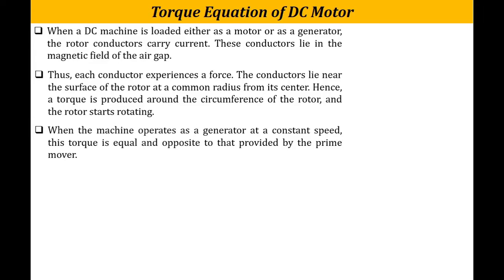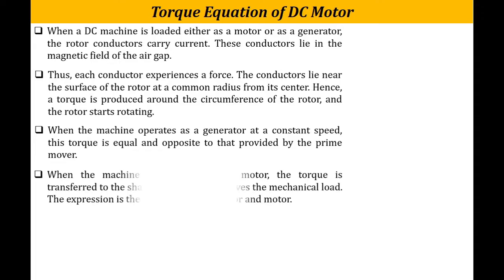Whenever the machine operates as a generator at constant speed, whatever torque is developed is equal and opposite to that provided by the prime mover. And whenever the machine operates as a motor, whatever torque is transferred to the shaft of the rotor drives the mechanical load. Because the mechanical load is connected to the shaft, whatever torque is produced will be taken by the mechanical load. The expression for both generator and motor is the same.